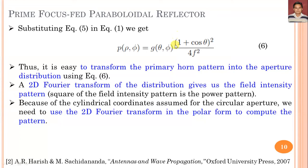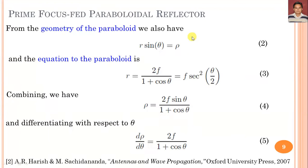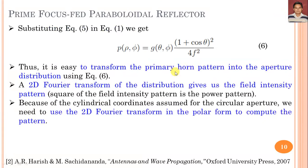It is easy to transform the primary horn pattern into the aperture distribution using this equation. A 2D Fourier transform of the aperture distribution gives the field intensity pattern, and the square of that gives the power pattern. Because of the cylindrical coordinates assumed for the circular aperture, the 2D Fourier transform is used in polar form to compute the radiation pattern of the paraboloid reflector.